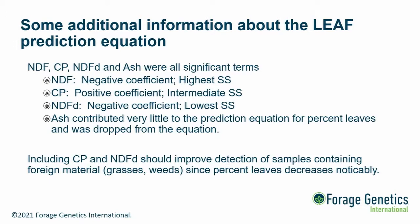Someone might ask why not just use NDF alone to predict leaf percent. The reason I wouldn't is that including crude protein and NDFD helps improve detection of samples containing foreign material — in alfalfa's case, grasses and weeds. This equation should not be used in samples that contain grass, for two reasons: it wasn't developed or validated with any grass-containing samples, and you can't interpret the results. If you have 20–50% grass in the sample, you simply can't tell what the leaf percentage means for the alfalfa portion.